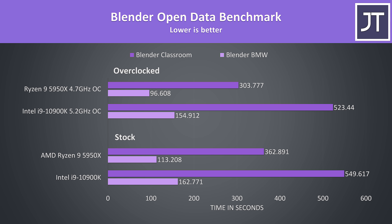I've tested the Blender BMW and Classroom benchmarks, and as another test that works better with more threads, it's another big win for the Ryzen 9 5950X. At stock the 5950X was 52% faster in the longer Classroom test, and this increases to a 72% lead with both overclocked, as the overclock is making a bigger difference to the 5950X here.